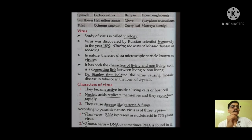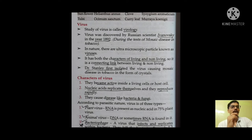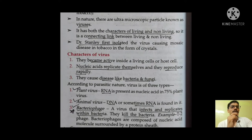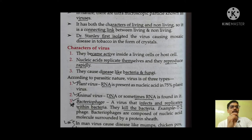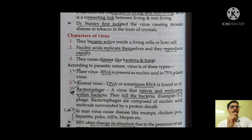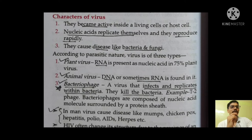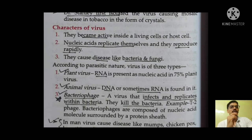After plant kingdom classification, the next topic is virus. The study of virus is virology. Virus was discovered by Russian scientist Ivanovsky in the year 1892. Viruses have the characteristics of both living and non-living — that is why they are called the connecting link between living and non-living. Viruses become active inside a living host cell, nucleic acid replicates itself, and they reproduce rapidly. They cause diseases just like bacteria and fungi. Generally viruses are inactive, but when they find a host or living cell they become active — the same thing is happening with coronavirus.